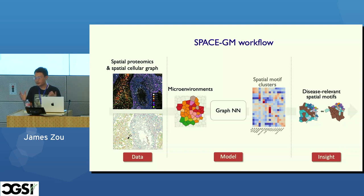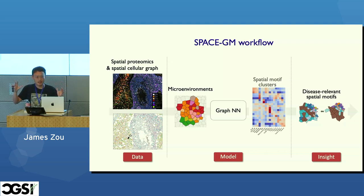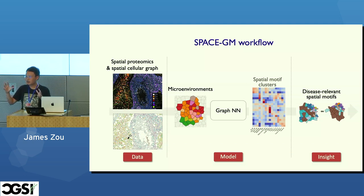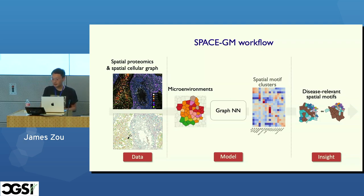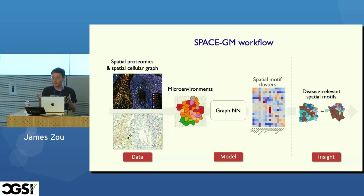To summarize the workflow: we start with multiplex spatial proteomics data — also applicable to spatial transcriptomics. We convert this into spatial graphs, which removes a lot of technical artifacts and batch effects. Then we do representation learning on top of those spatial graphs to identify the microenvironments, and generate biological insights by doing spatial in silico perturbations or permutations of the microenvironments to see which motifs predict patient response.